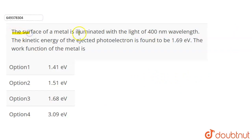In this question, the surface of a metal is illuminated with light of 400 nanometer wavelength. The kinetic energy of the ejected photoelectron is found to be 1.69 electron volts. We need to find the work function of the metal.